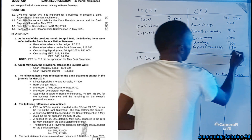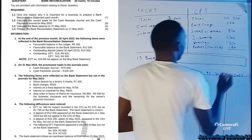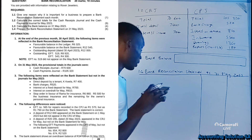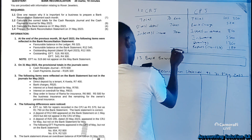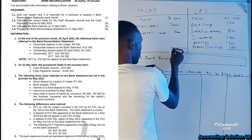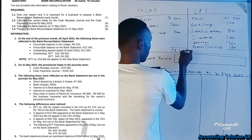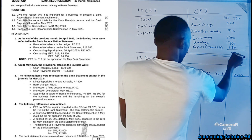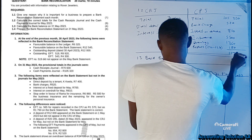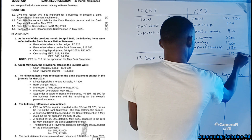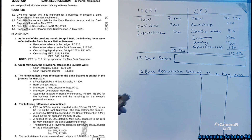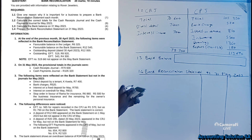If you calculate the totals, the cash receipts journal side gives you R78,700 and the cash payment journal side gives you R113,690. We are done with question 1.2.